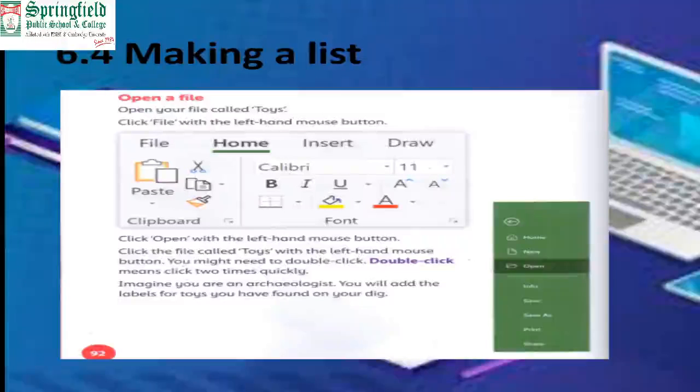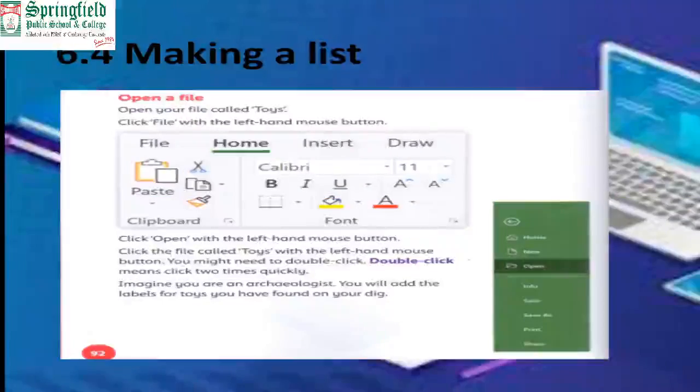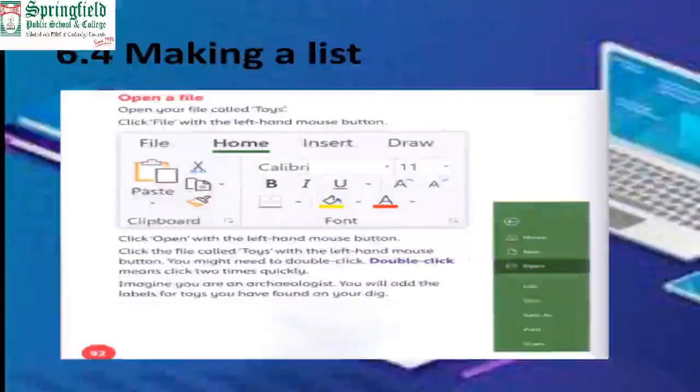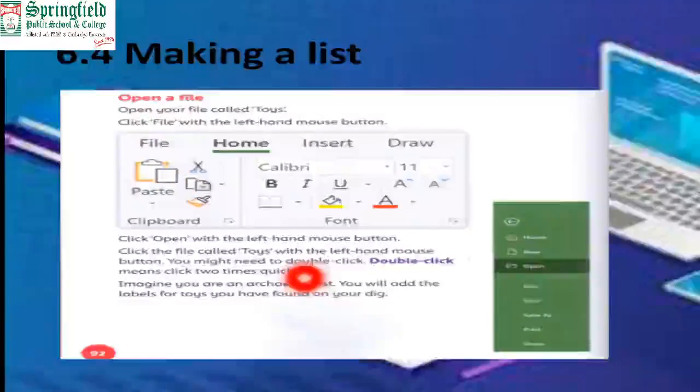Today we will learn how to make a list. We have already made a list in our Zoom class where we entered the numbers of toys and the names of toys. Now what we are doing is opening that file we have already saved in our systems.